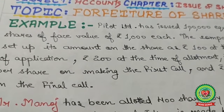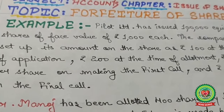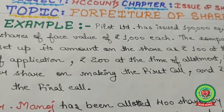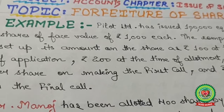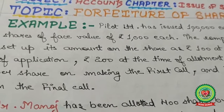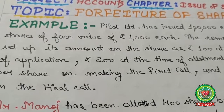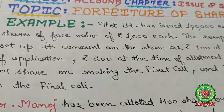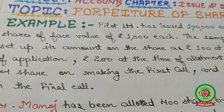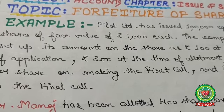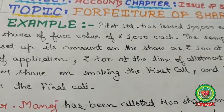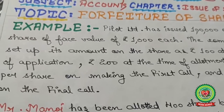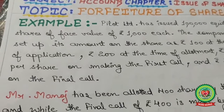Today's topic is all about forfeiture of shares. In simple words, what is the meaning of forfeiture? It is a cancellation — cancellation of shares. Forfeiture of shares means cancellation of shares when the shareholder fails to pay the dues. The company demands the due amount two or three times, and after giving a 14-day notice period, forfeits the shares of the shareholder.